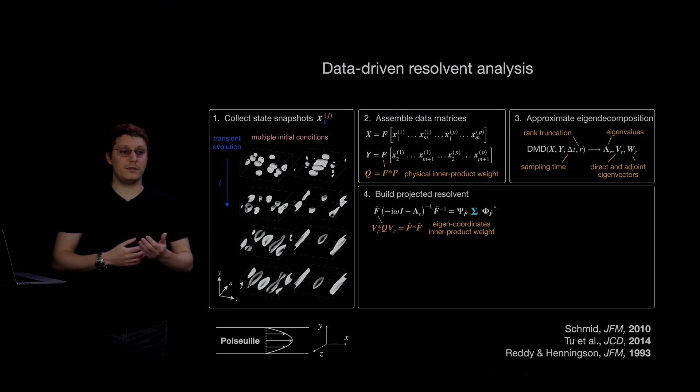This projection of the resolvent was first used by Reddy and Henningsen in 1993, where they used it to reduce the computational cost of computing resolvent gains.